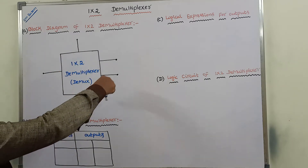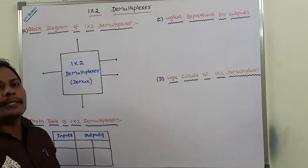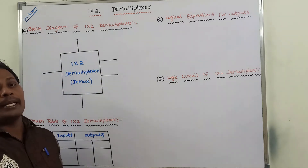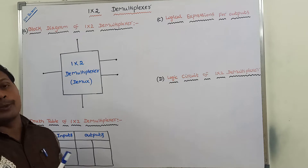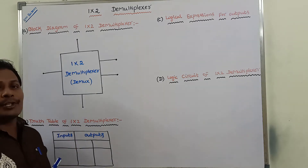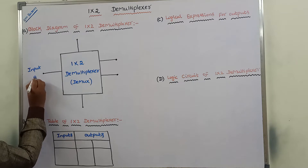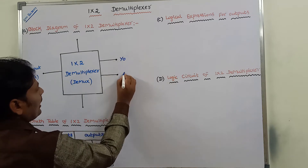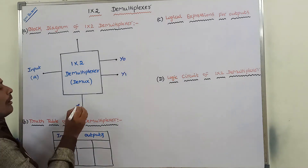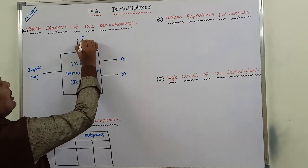This is the block diagram of a 1 by 2 demultiplexer. As the name implies, a 1 by 2 demultiplexer takes only one input and produces two outputs using one selection line. The input line is denoted by A, the two outputs are denoted by Y0 and Y1, the selection line is denoted by S0, and there is also an enable input.